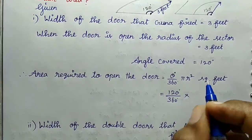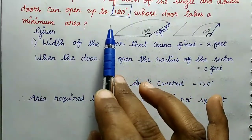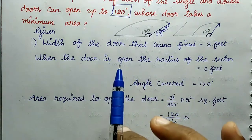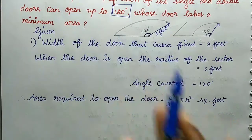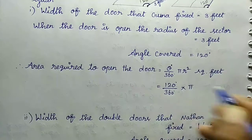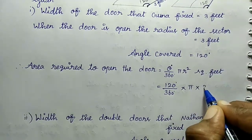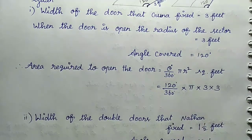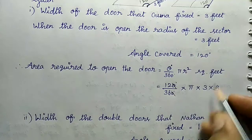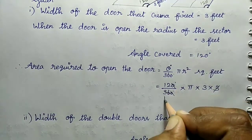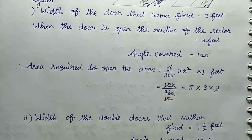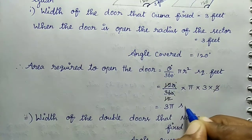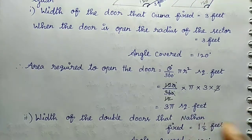Applying the values: θ = 120, r = 3, π = 22/7 or 3.14. Substituting: (120/360) × π × 3² = (1/3) × π × 9. Simplifying: 3 × π = 3π square feet. So the single door covers an area of 3π square feet.